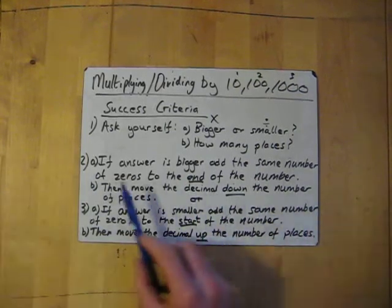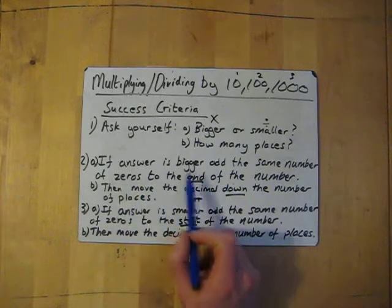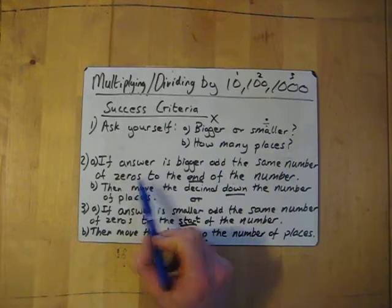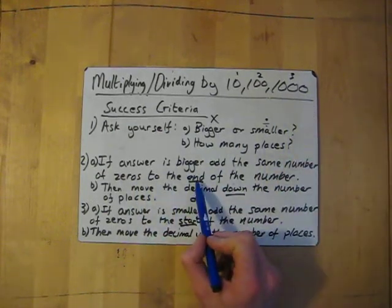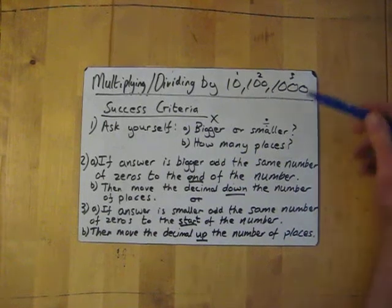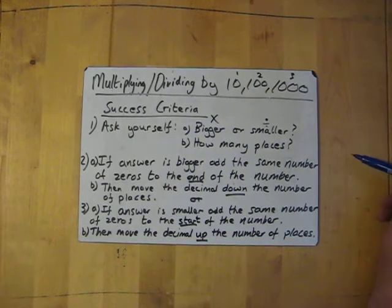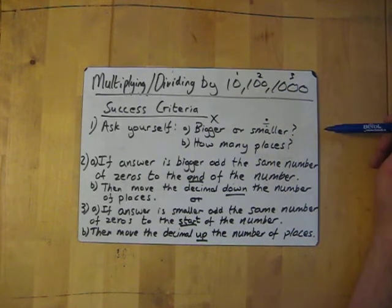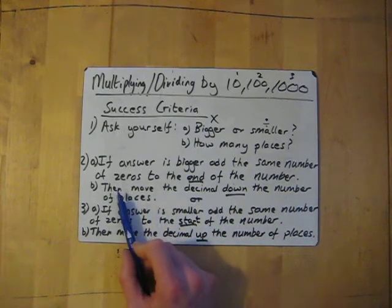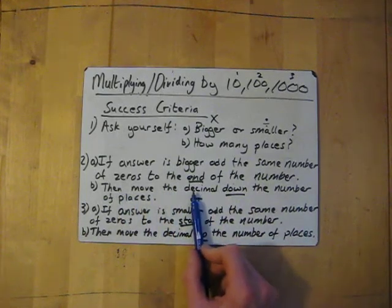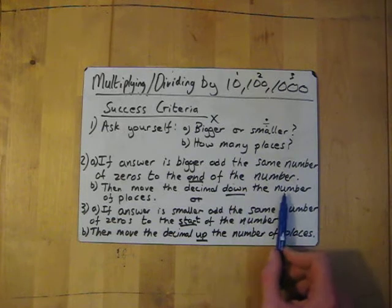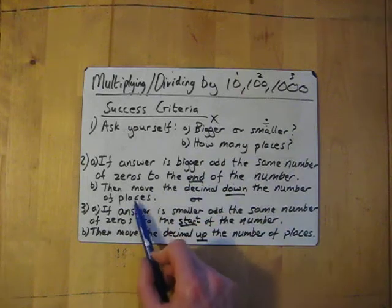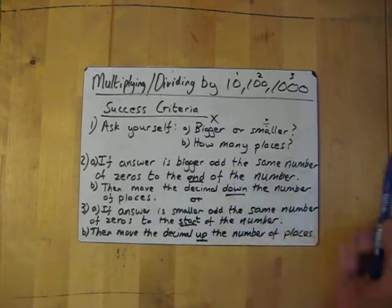When you've got those two answers, if your answer is bigger — multiply — then add the same number of zeros that's in the question to the end of the number. So if you're multiplying by 10, you just add one zero. If you're multiplying by 100, you'd add two zeros to the end, and so forth. Then move the decimal point down the number of places. So if it was two places, you'd move the decimal point down two places, and that gives you the answer.